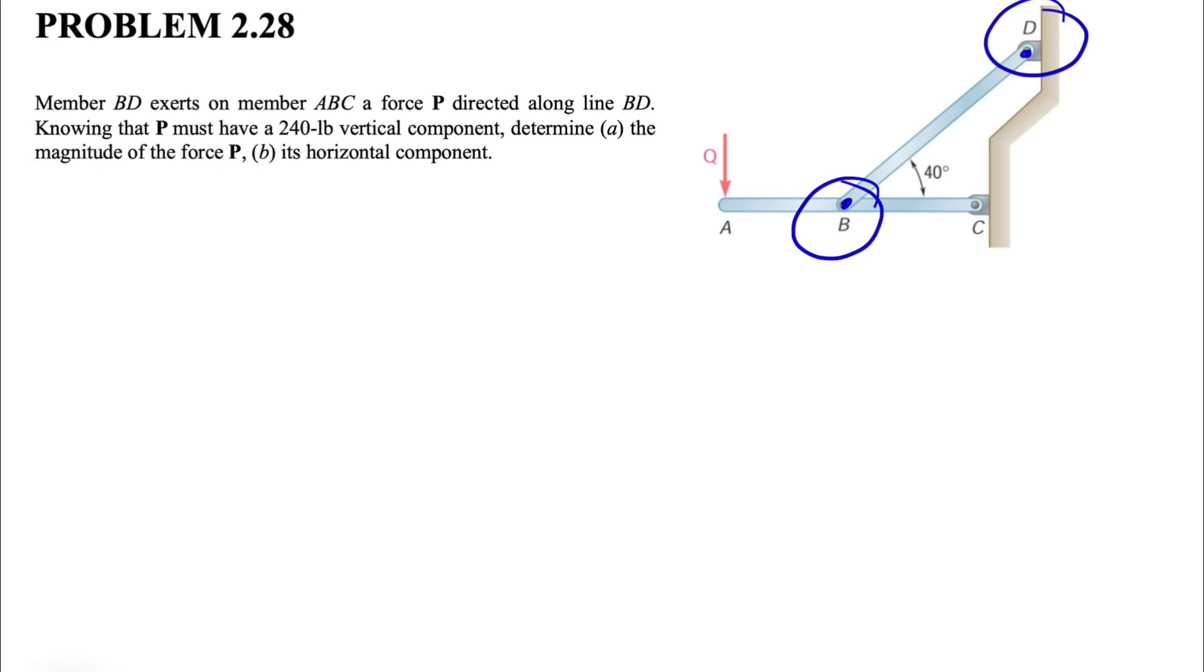And if that's the case, let's say this is our member AC, and in B we have this force, where we call it P. And what we need to figure out in here is the horizontal and vertical component of this force. Let's show our X and Y in here, so let's call this one our X, and this one will be our Y axis.